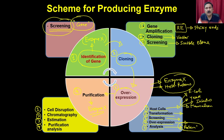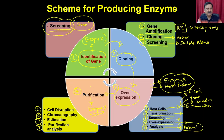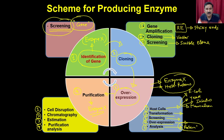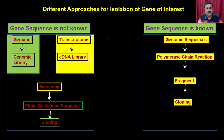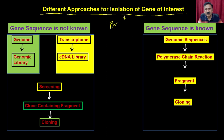All four steps are required to produce the enzyme under approach 2. Today we will discuss how to identify the gene corresponding to protein X or enzyme X. There are different approaches for isolation of the gene of interest.